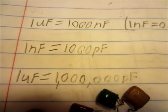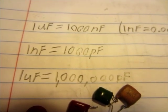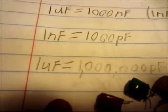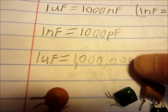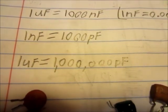Also, 1 nanofarad equals 1,000 picofarads. Picofarads is really small. I think that's the smallest amount. And you could also say 1 microfarad equals 1,000,000 picofarads.